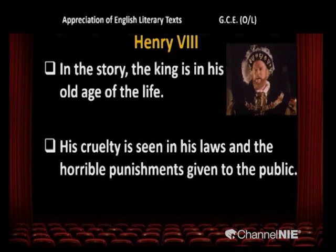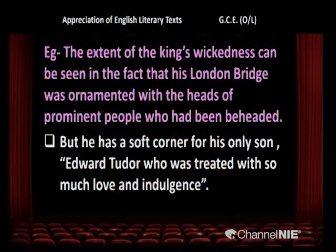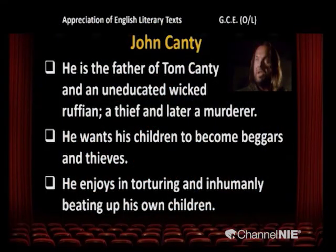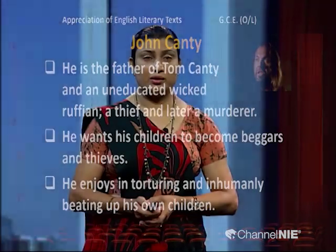Henry VIII — in the story the king is in the old age of his life. His cruelty is seen in his laws and the horrible punishments given to the public. The extent of the king's wickedness can be seen in the fact that London Bridge was ornamented with the heads of prominent people who had been beheaded. But he has a soft corner for his only son, Edward Tudor, who was treated with great love and indulgence. John Canty is the father of Tom Canty and an uneducated, wicked ruffian — a thief and later a murderer. He wants his children to become beggars and enjoys torturing and inhumanly beating up his own children.